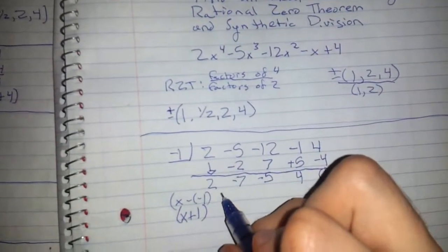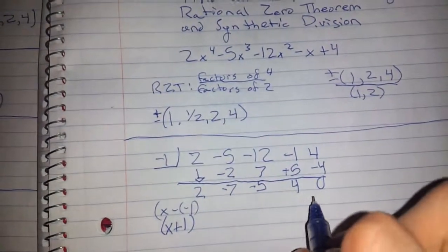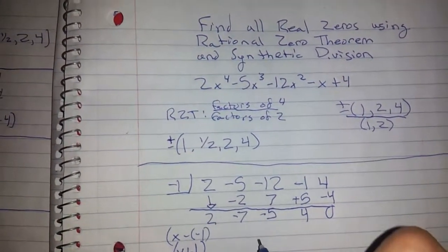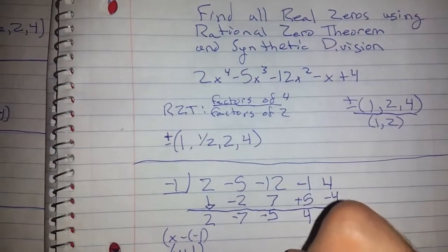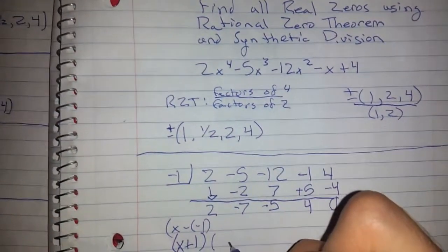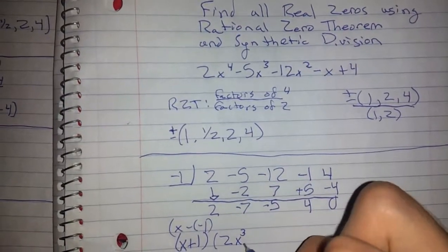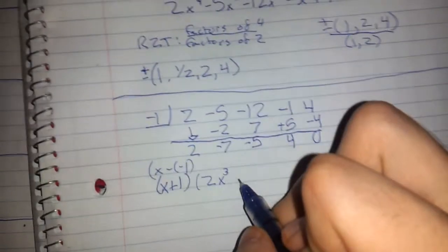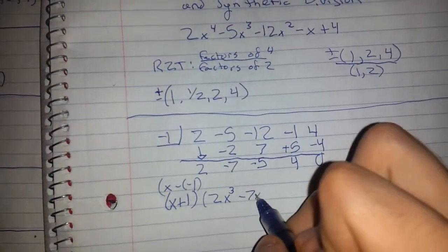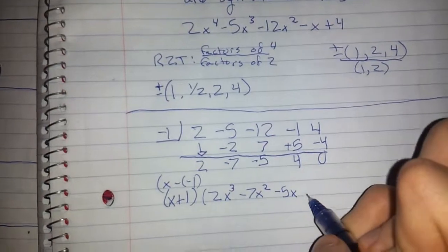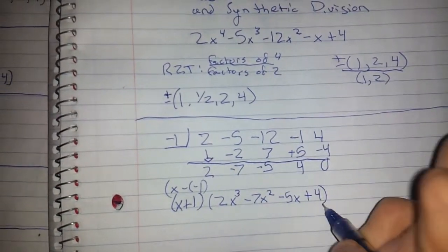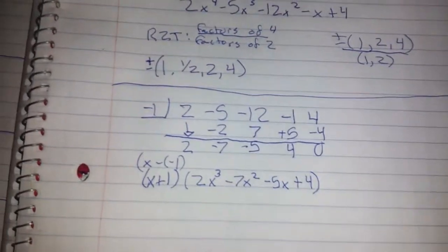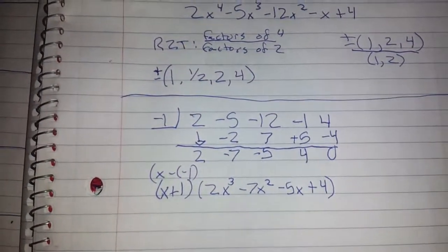Through synthetic division, we also have the quotient, I believe it's called. And that's going to be 2x cubed. You drop that down 1 multiplicity, minus 7x squared minus 5x plus 4.